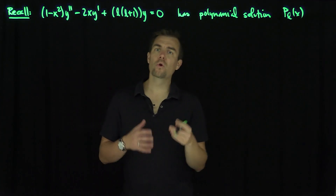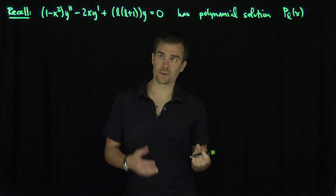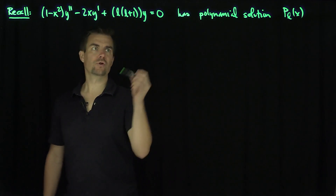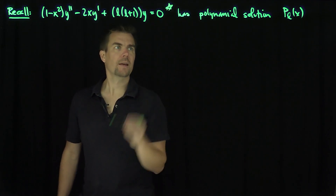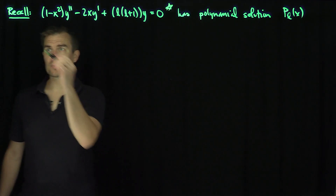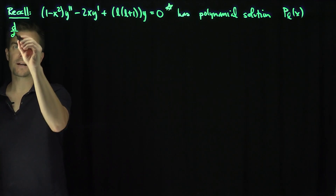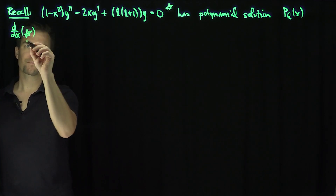The question for us is: what equation do the derivatives of the Legendre polynomial satisfy? So if we take this equation — let's call it equation (★) — what I'd like to do is find the derivative of equation (★) with respect to x.